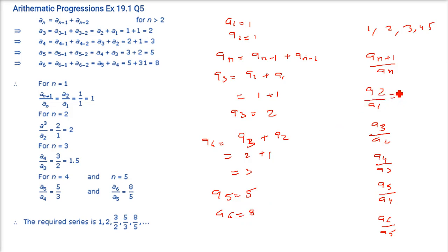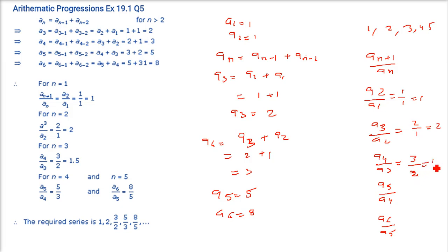Now the ratios: a₂/a₁ = 1/1 = 1. a₃/a₂ = 2/1 = 2. a₄/a₃ = 3/2 = 1.5. a₅/a₄ = 5/3. a₆/a₅ = 8/5. These are the values you get.